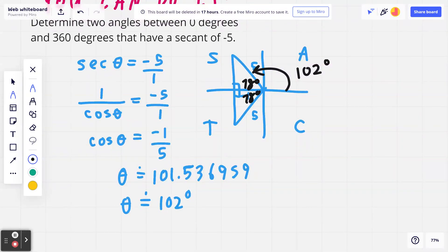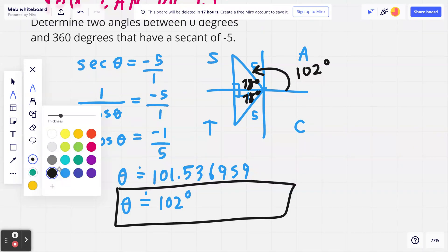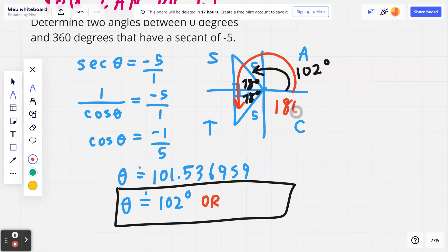So the two answers: one of them is going to be 102 degrees. The second answer, angle theta is going to be, you take half a circle which is 180 degrees, and you're adding it to the related acute angle 78 degrees. 180 plus 78 gives you 258 degrees.